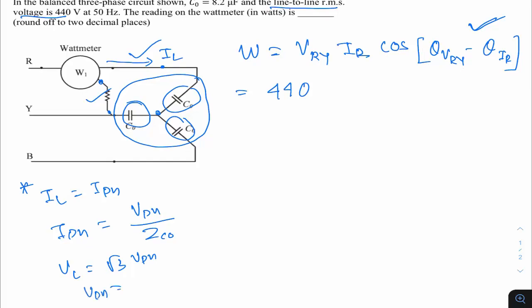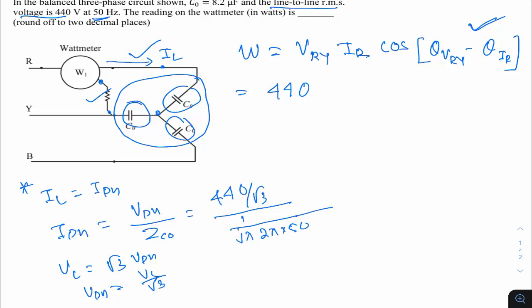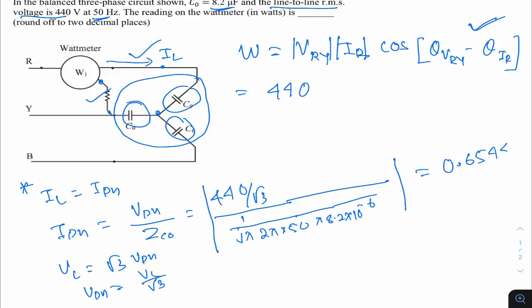So I_phase = (440/√3) / (1/(j·2π·50·8.2×10⁻⁶)). Taking the magnitude (since we need RMS values and the j term doesn't affect magnitude), computing gives |I_R| = 0.6544 A.